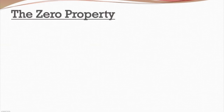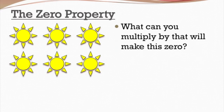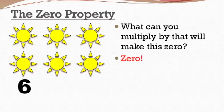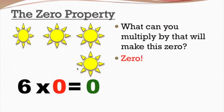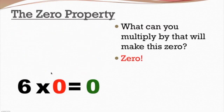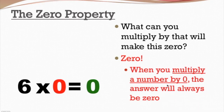Now we spoke about the identity property of addition and the identity property of multiplication, so now we're moving on to the zero property. Let's say I have these 6 suns. What can I multiply by to make this number of suns 0? Well, that's just 0. So if I have 6 suns times 0, I end up with 0 — and this is no longer here. Because any time I multiply something by 0, I get 0. That's what the zero property says: when you multiply a number by 0, the answer will always be 0.